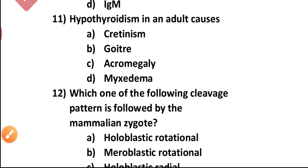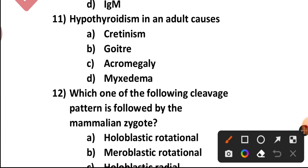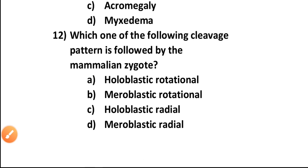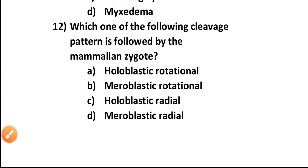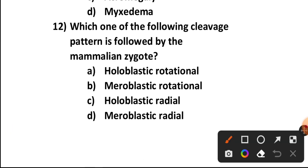Question number eleven: Hypothyroidism in an adult causes — cretinism, goiter, acromegaly, or myxedema? Since the question asks about adults, the answer is myxedema. Option D.